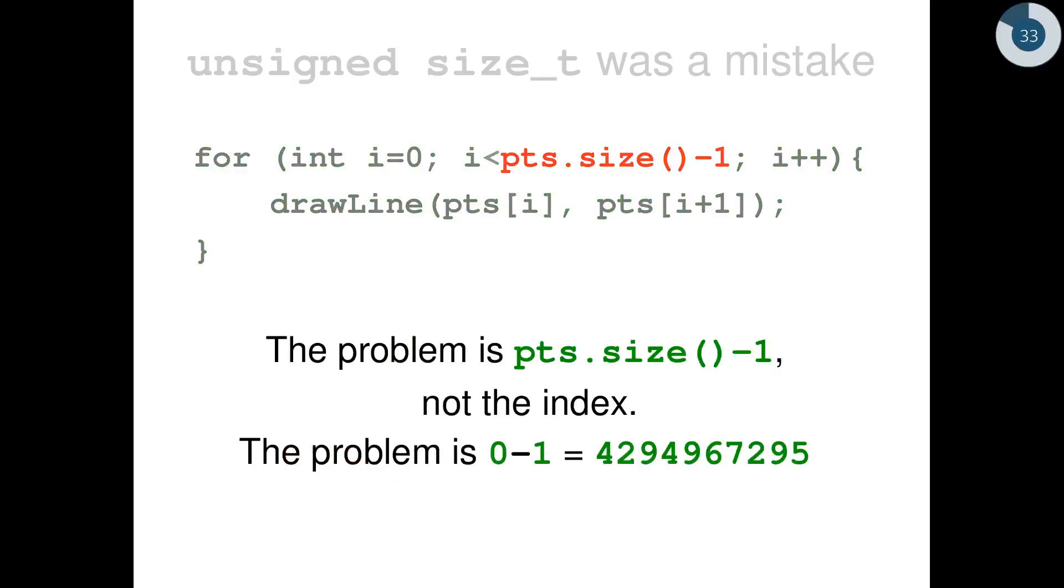It would just shut up the warning. The code will still be broken for an empty vector and will still get undefined behavior. The problem in this code is pts.size() minus one. It's not the index. pts.size() minus one, because pts.size() is an unsigned value, is, for an empty vector, four billion something. This is the key issue.